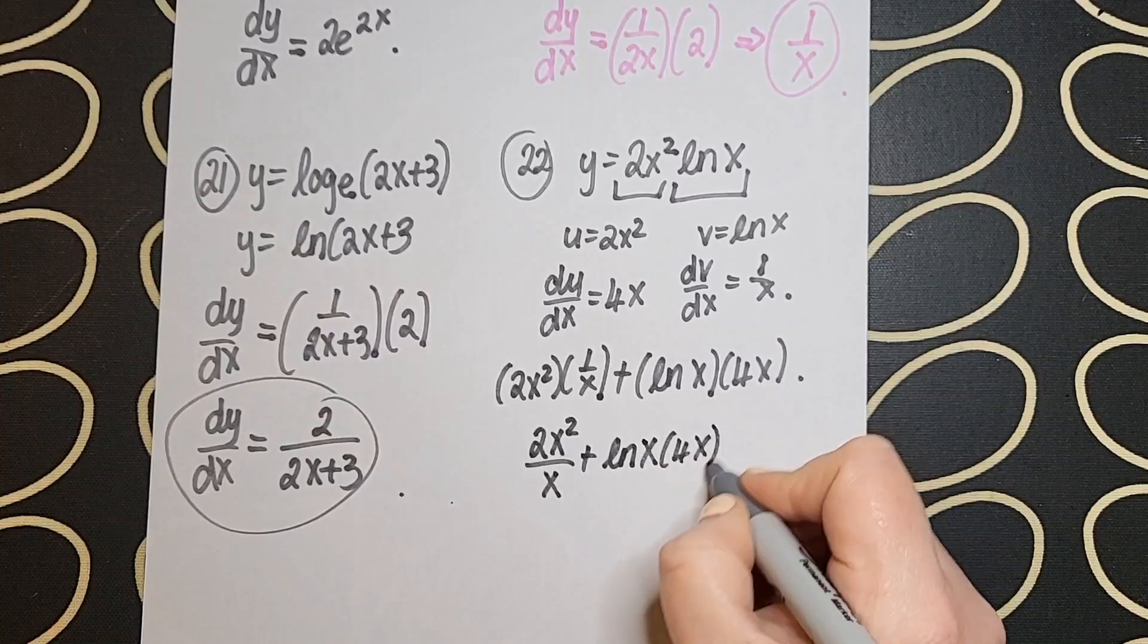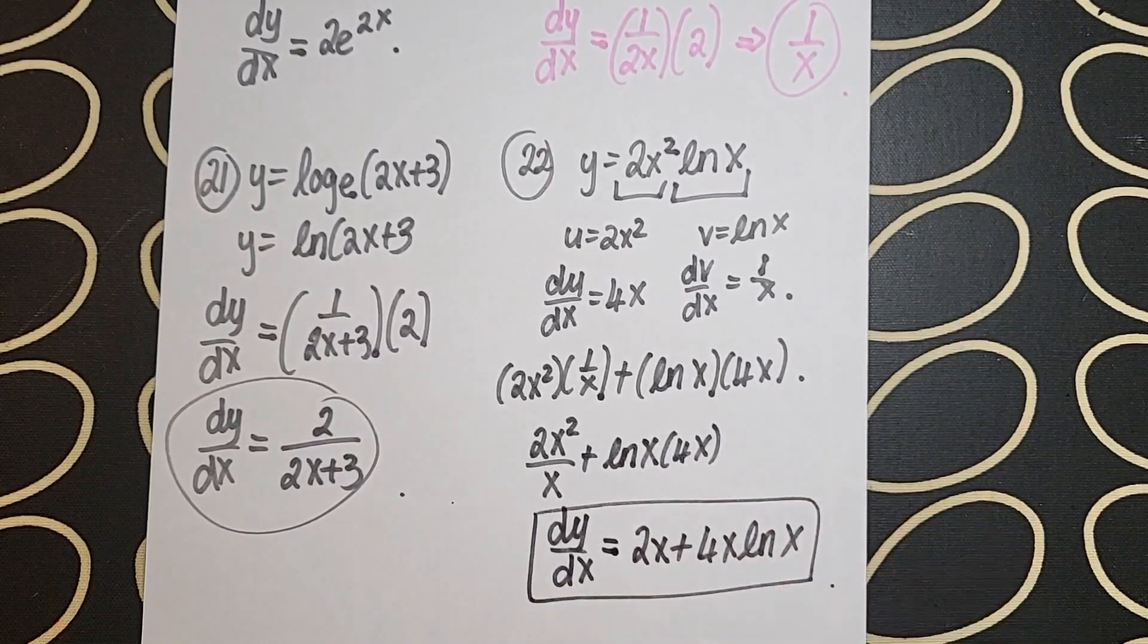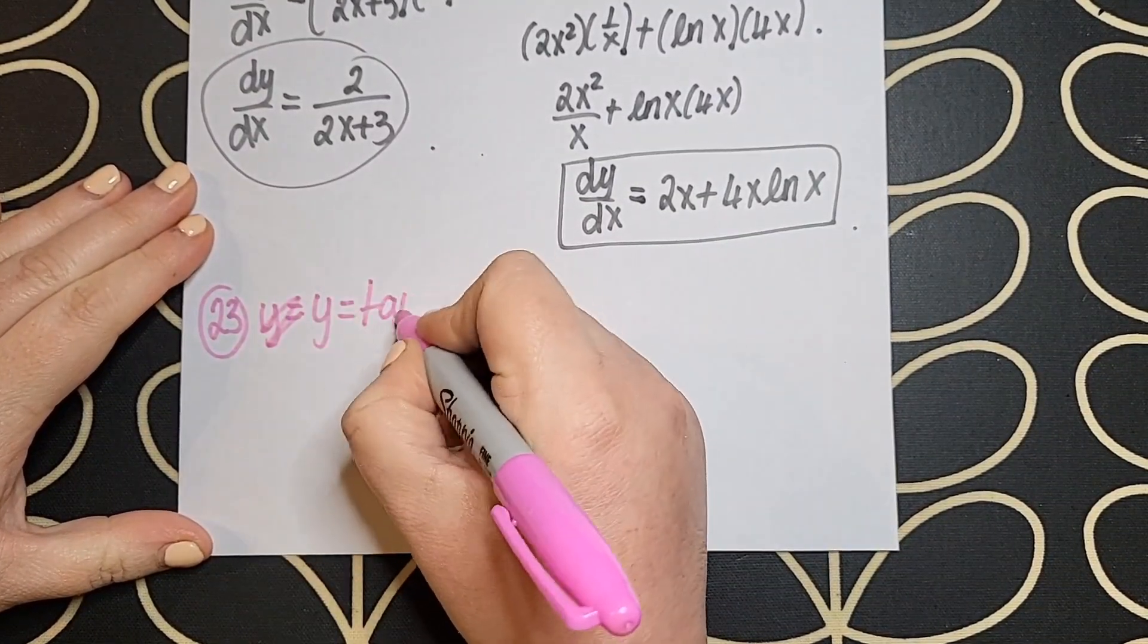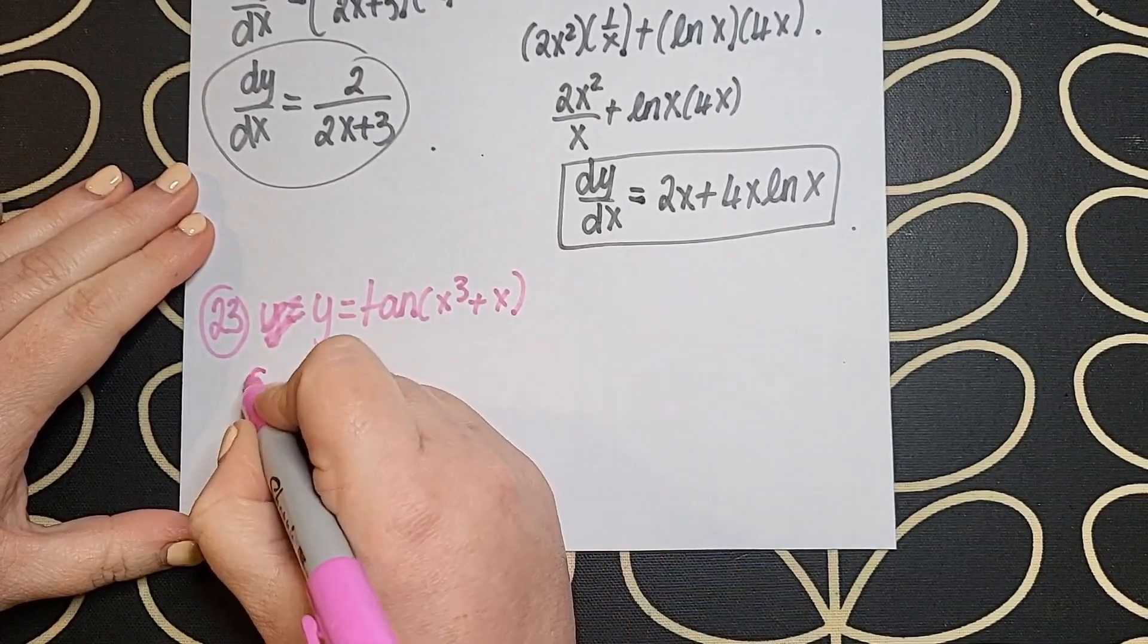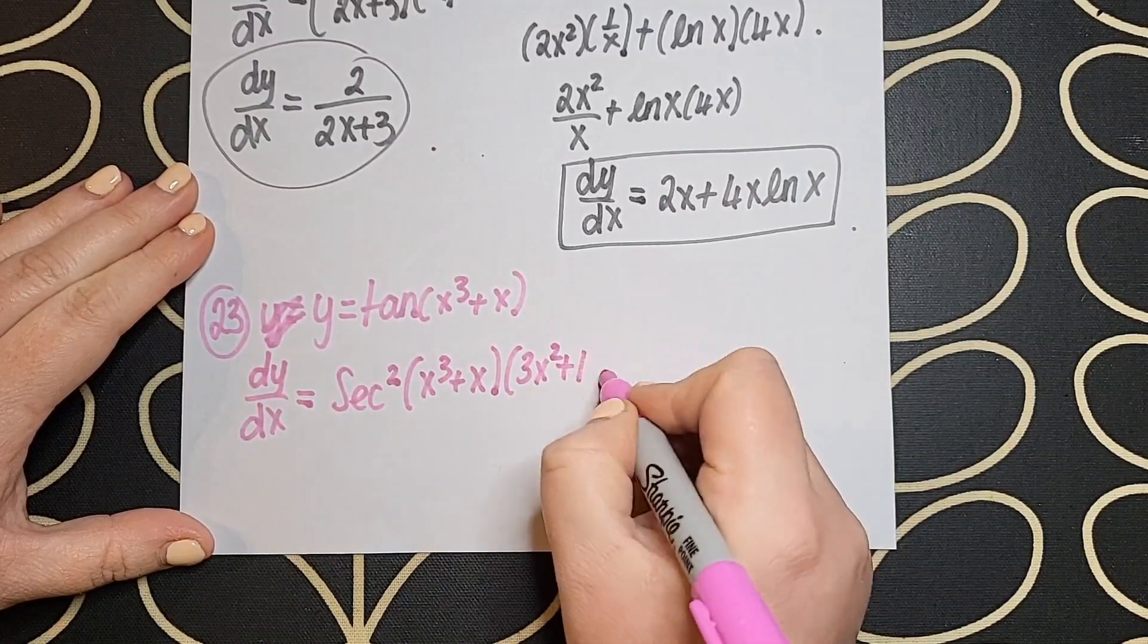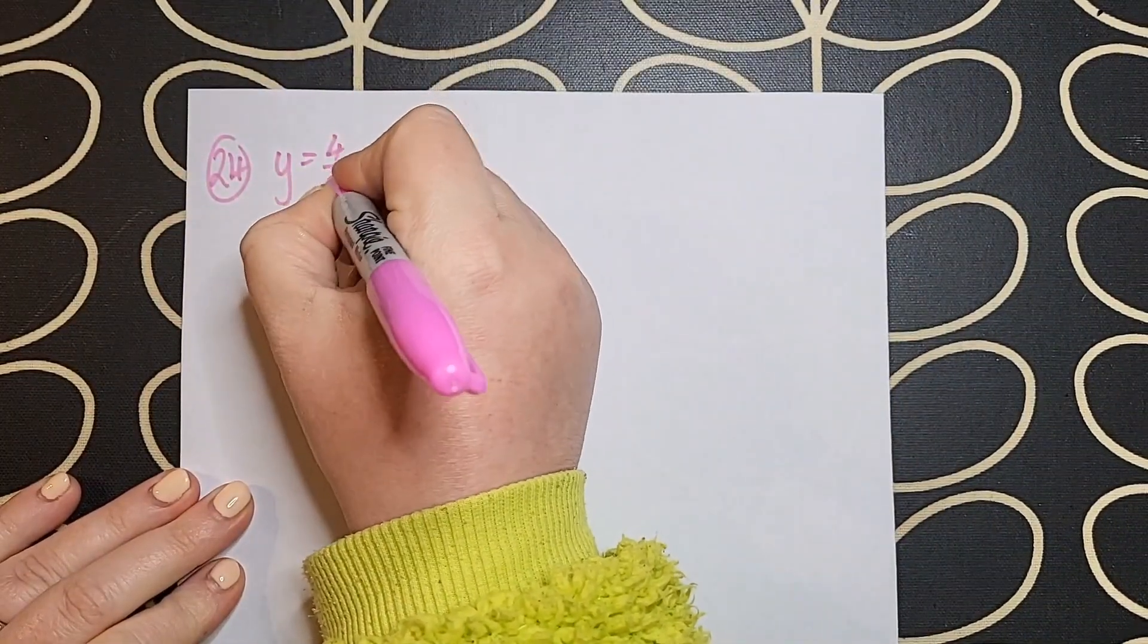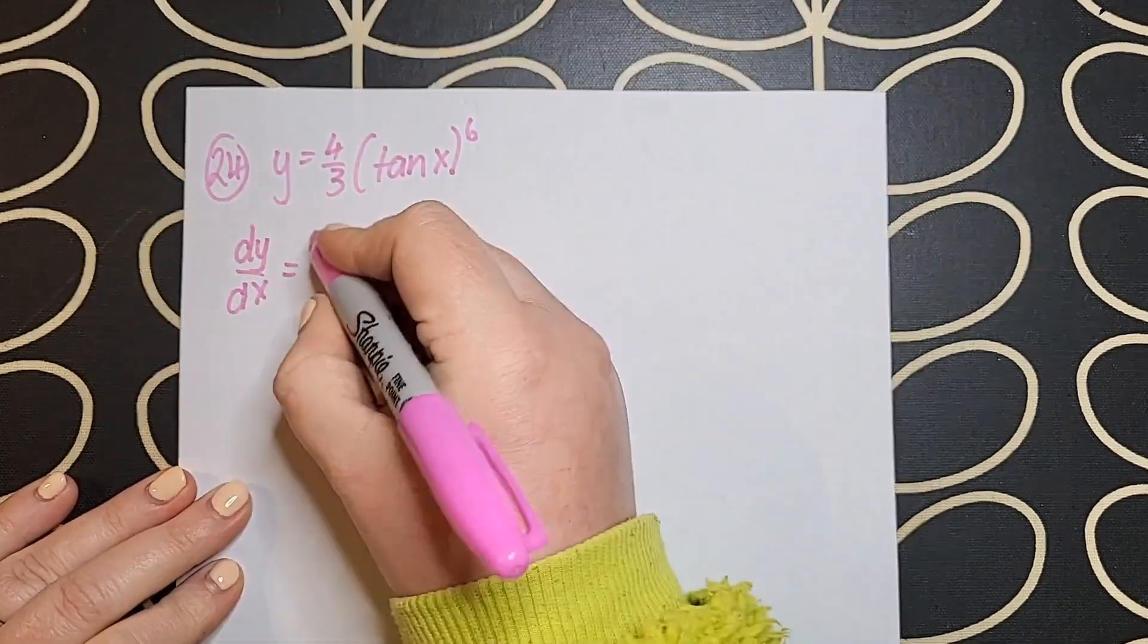And in question 23 there we are using trig. Again the trig differentiation rules are in your log tables your cos, your sine, your tan. However if you have something like we have here which is the x cube plus x that's not what's in the log table. So that's the chain rule. So I differentiate tan of something but then I must get the derivative of the actual bracket which is 3x squared plus 1. We are flying through these we are nearly done.